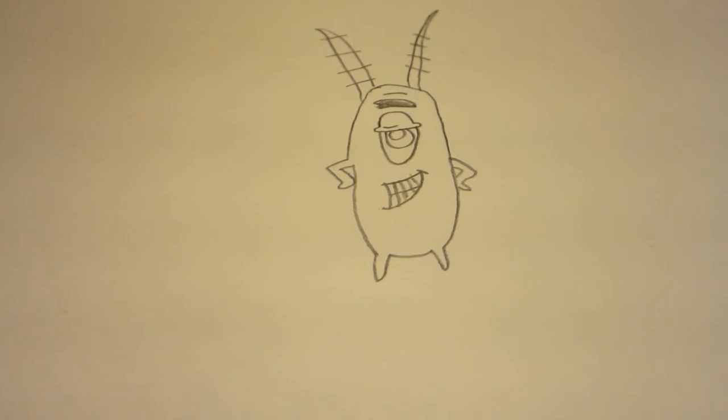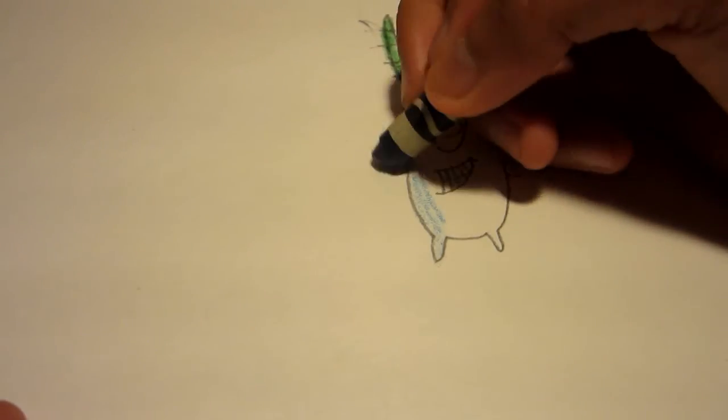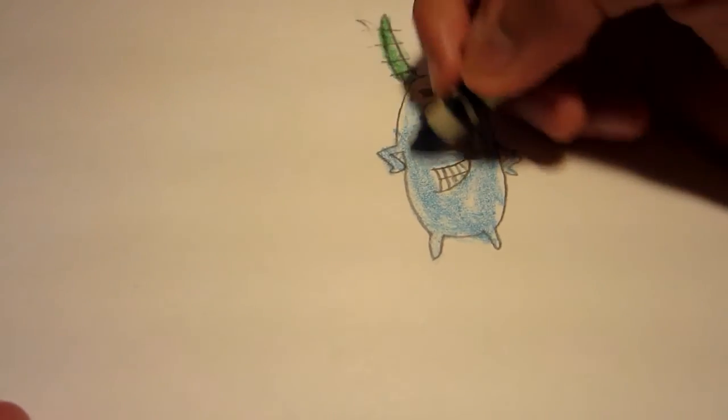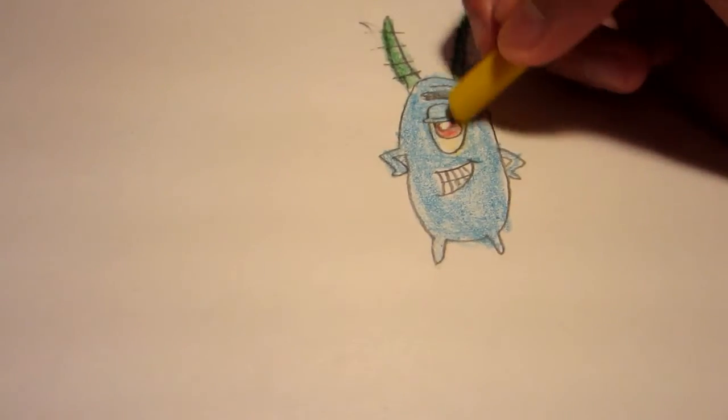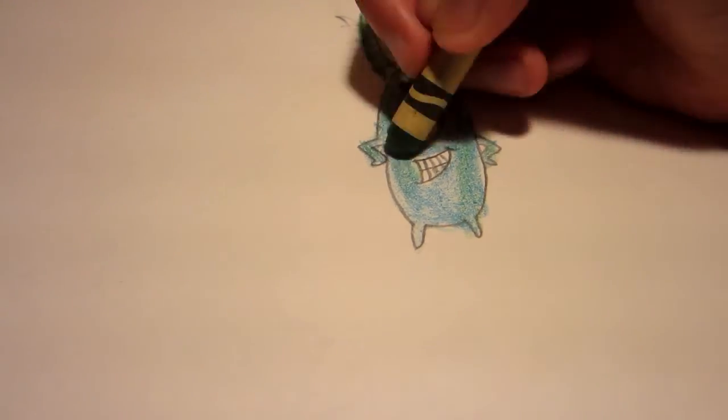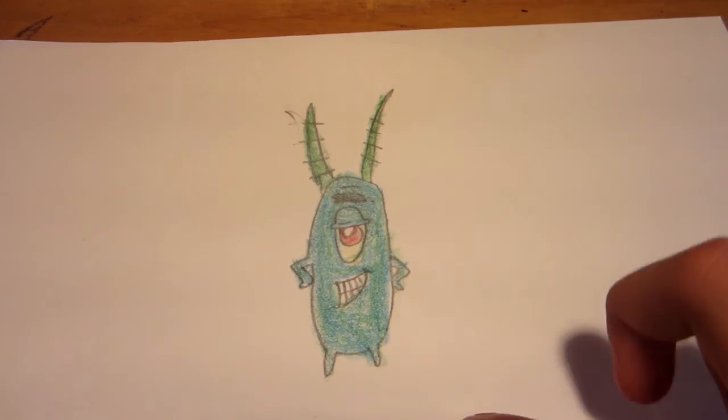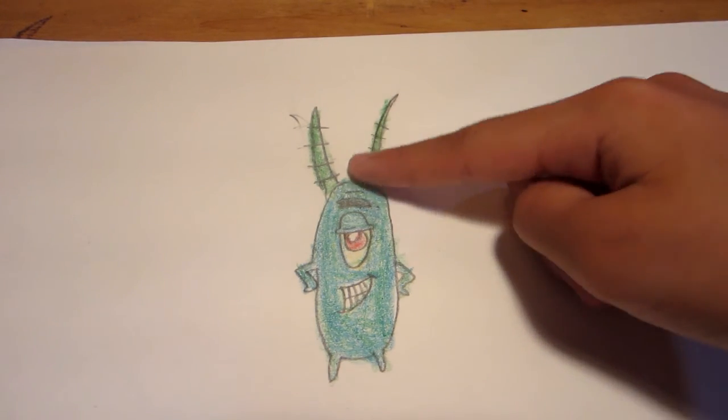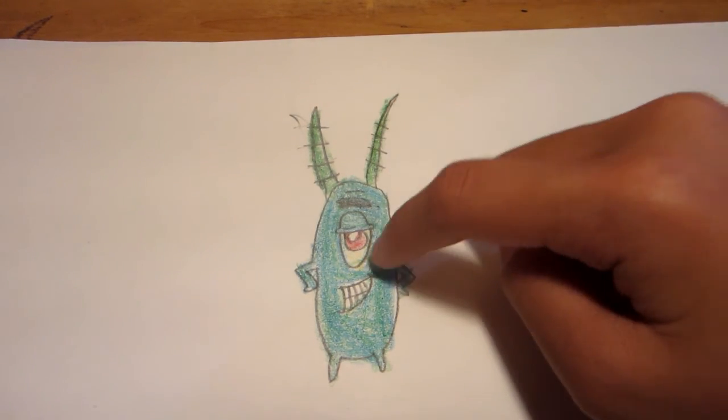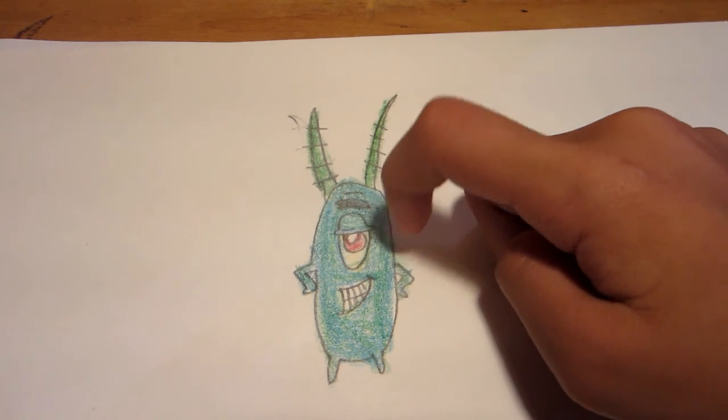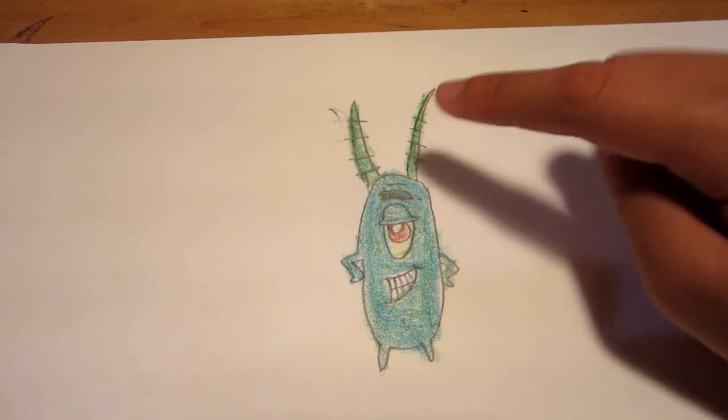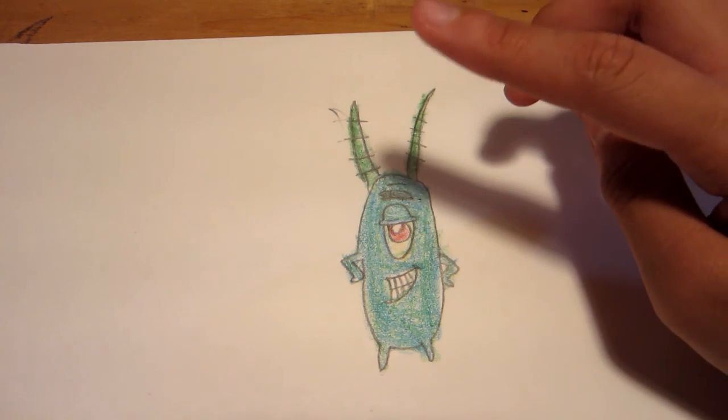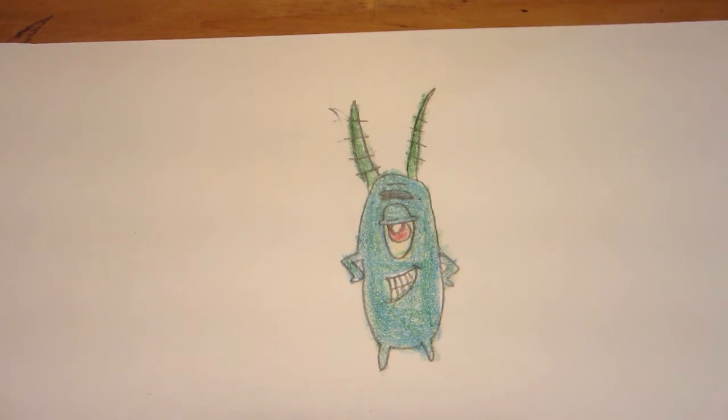So now I'm going to color him. This is it. His antennae or antennas are dark green. This part of his eye is like white, and then red, and his eye is like slightly light yellow. His teeth are white, and his skin is kind of like green, only like a little bit of bluish, so I just blended them in together.